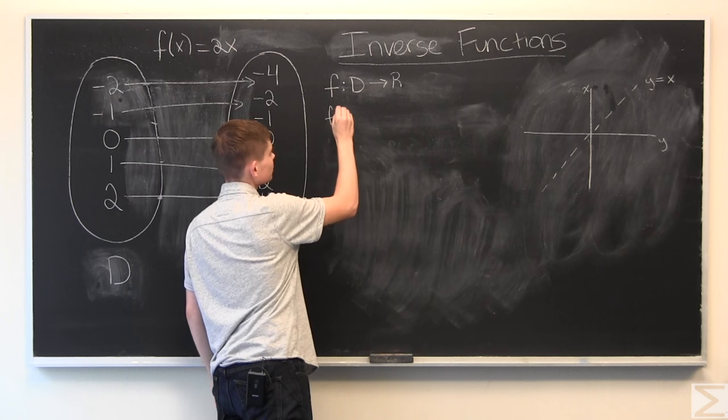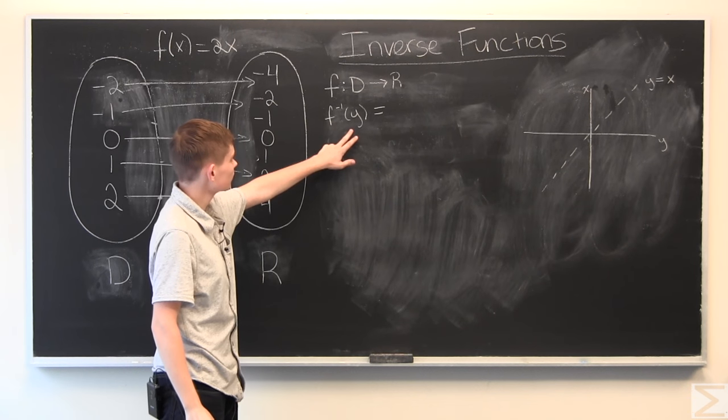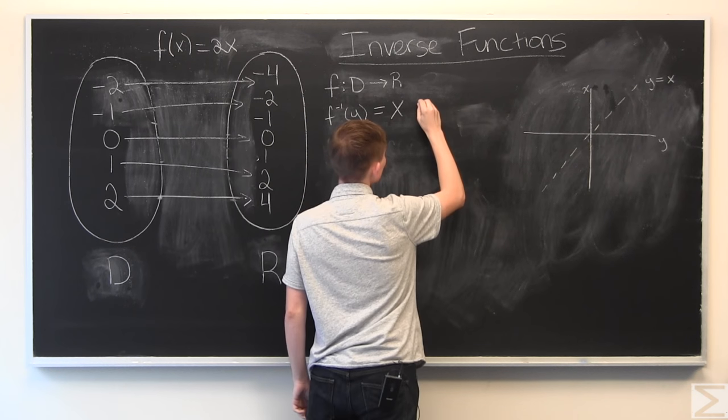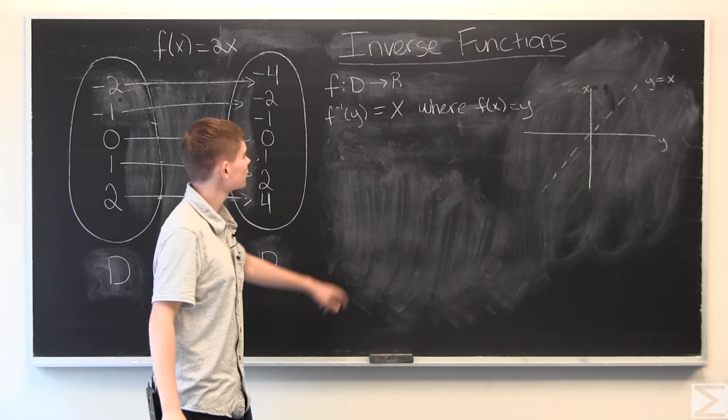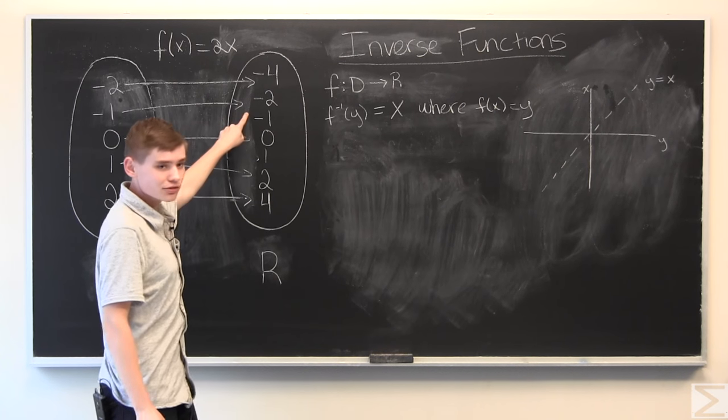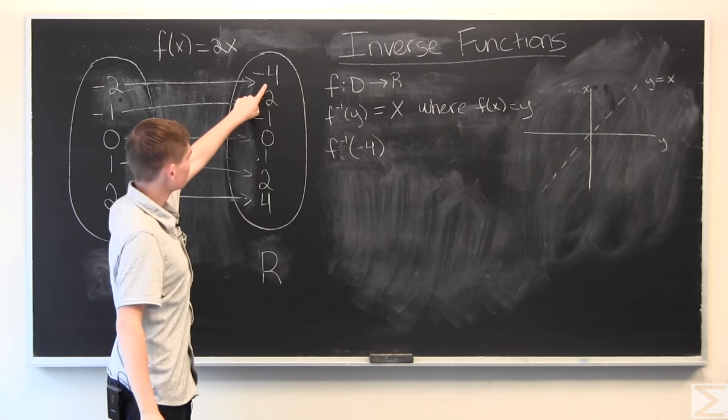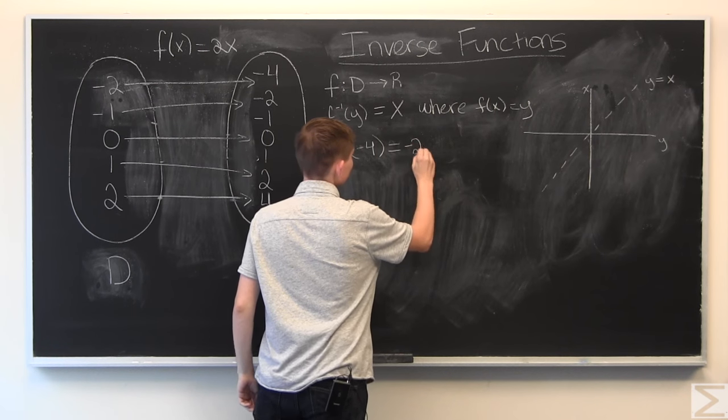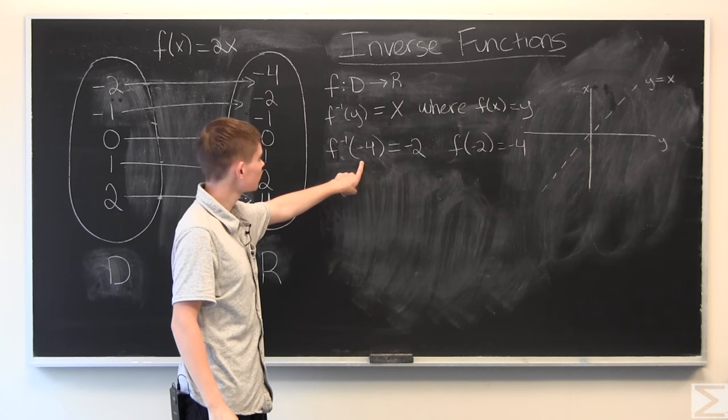The inverse function, which is usually written something like this. So, for the inverse of y, y being in r, it is equal to x, where f of x is equal to y. This is the notational definition of an inverse function. To explain it, we can go back to the mapping. So, if we take the inverse of negative 4, what we do is we find negative 4, we follow the arrow back, and we get negative 2.